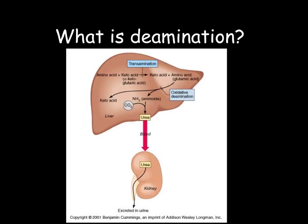Looking more closely at deamination: it occurs in the liver. The amino acid is broken down to form a keto acid and ammonia. The ammonia combines with carbon dioxide to form urea — and remember that the formation of urea requires ATP. This urea moves in the blood to the kidneys, where it is excreted in urine.